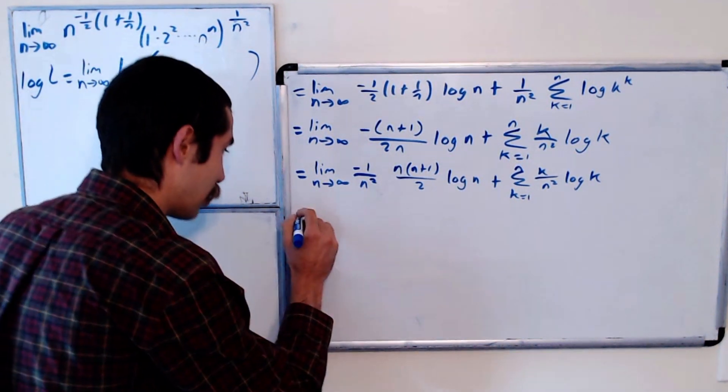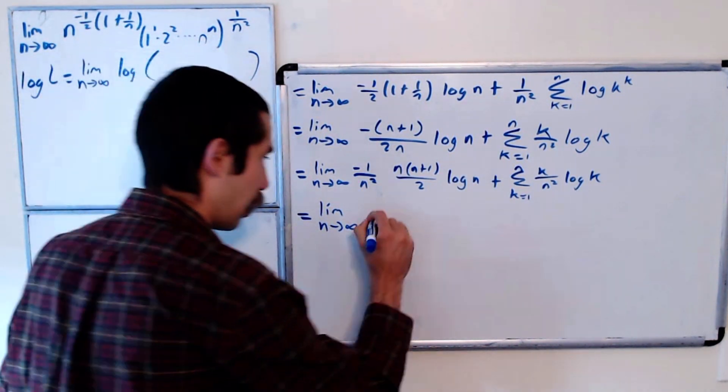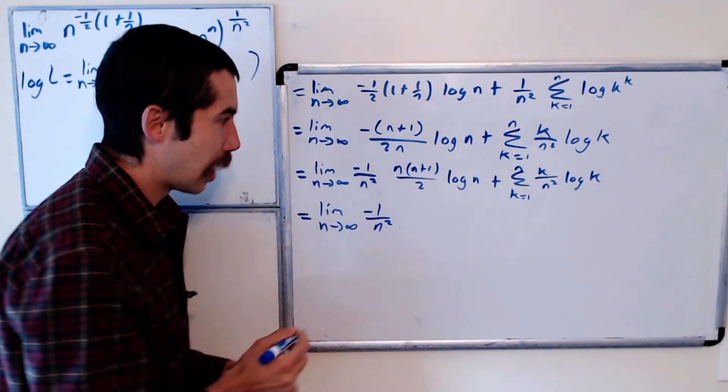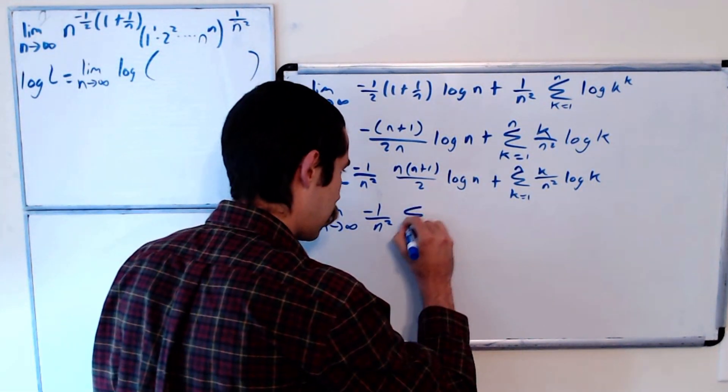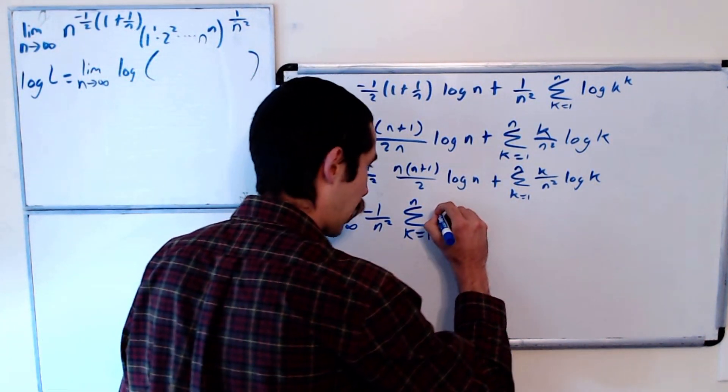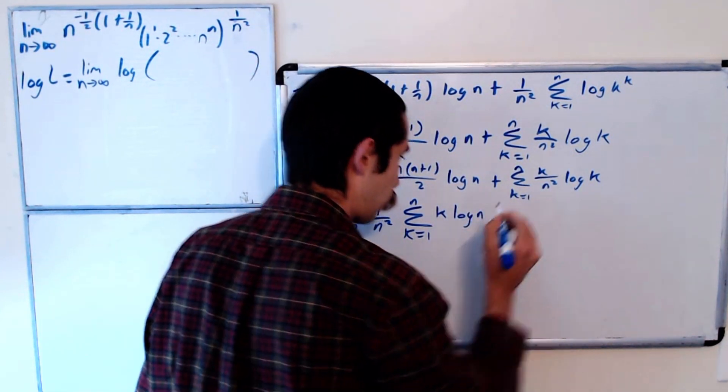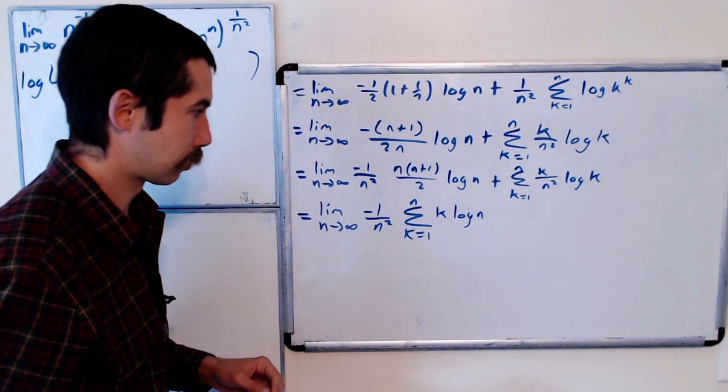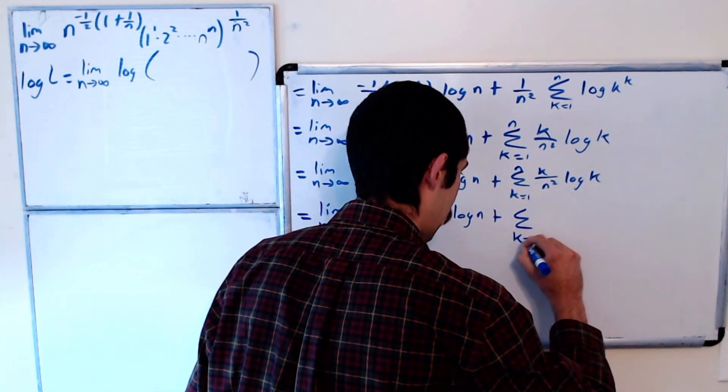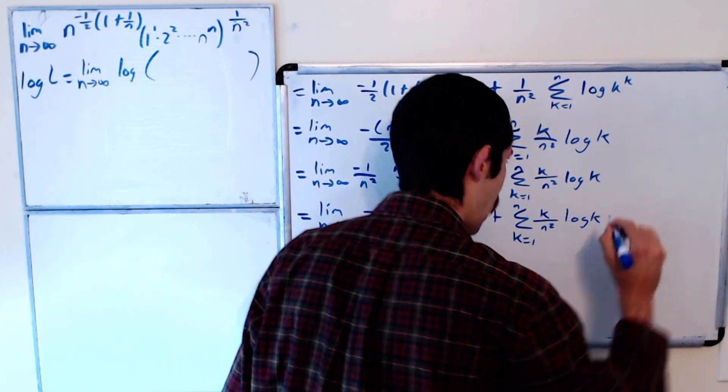Okay, so n times n plus 1 over 2—that's the sum of the first n integers. Okay, so this is equal to the limit as n goes to infinity of negative 1 over n squared times the sum from k equals 1 to n of k log n, plus the sum from k equals 1 to n of k over n squared log k.